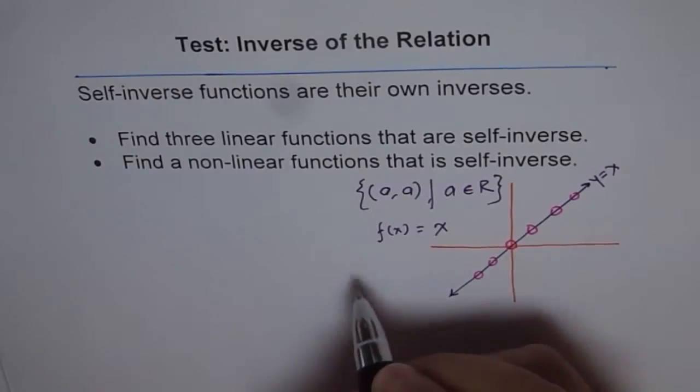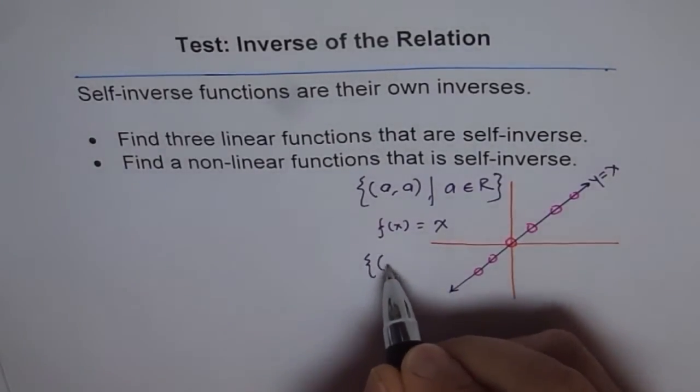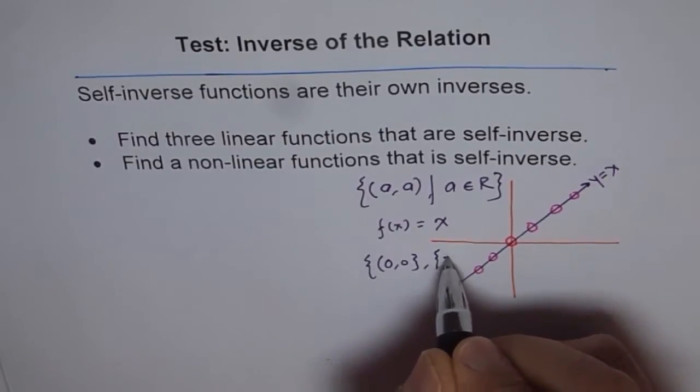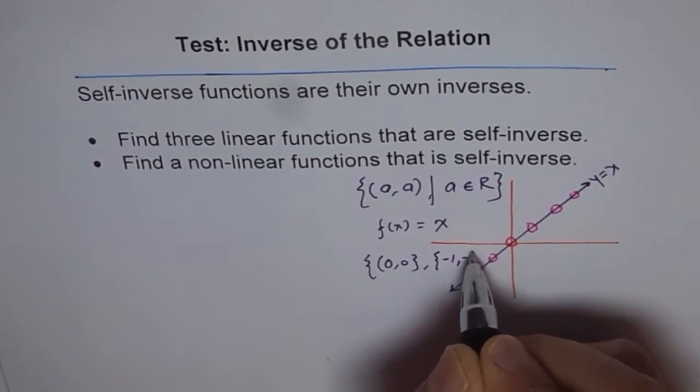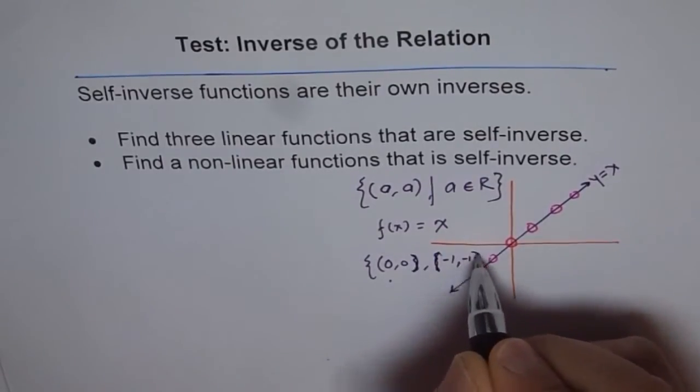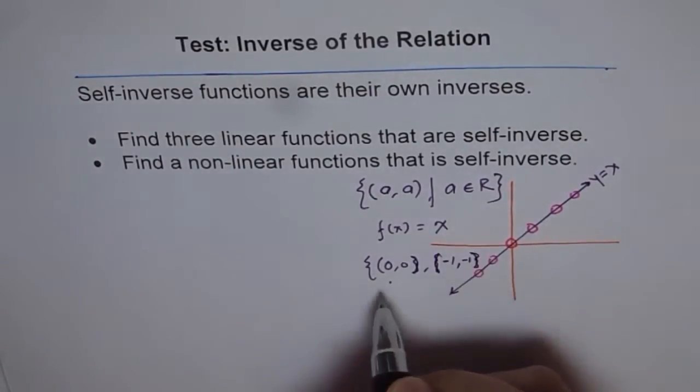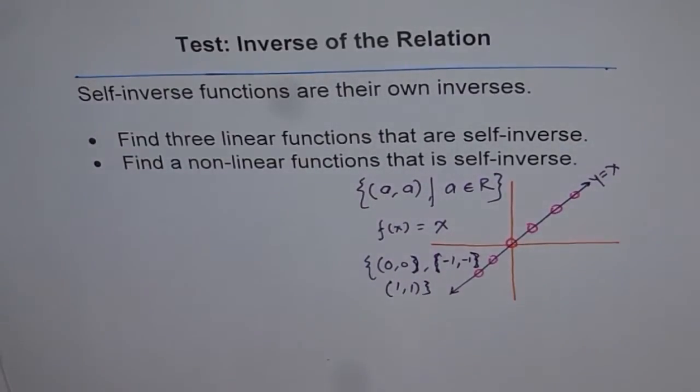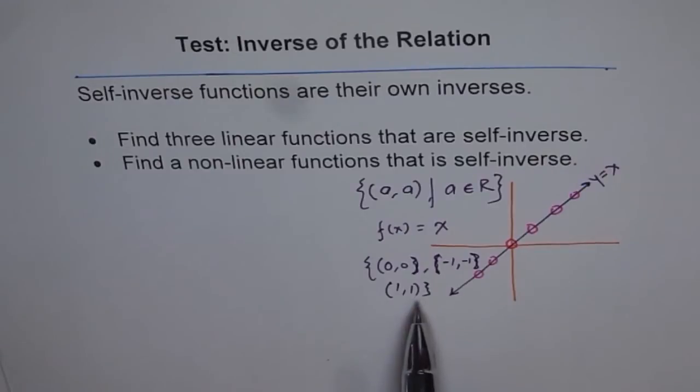Or, we could have just a function with a few points. For example, 0, 0, minus 1, minus 1. Sorry, this should be curly, this should not be curly brackets. And, let's say 1, 1. Let's say like this. So, all these points are invariant points. And, their inverse will be the points themselves. So, that is what gives rise to self-inverse functions.